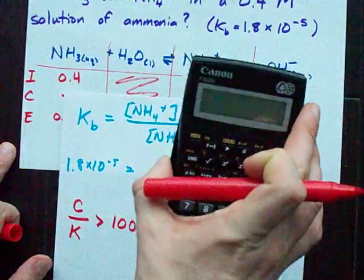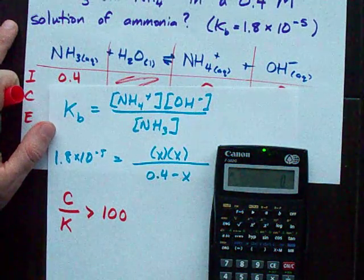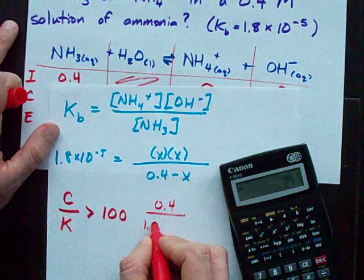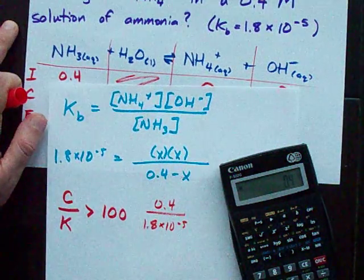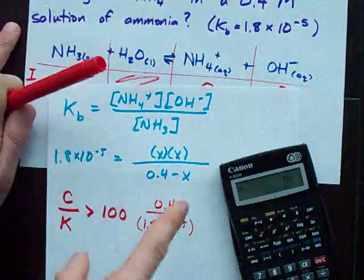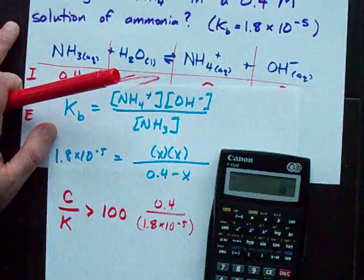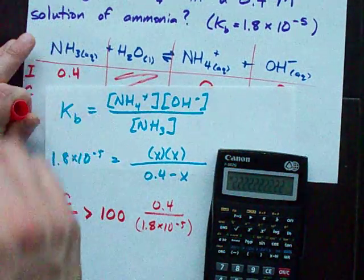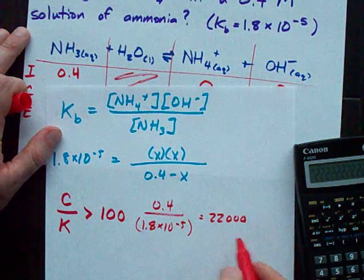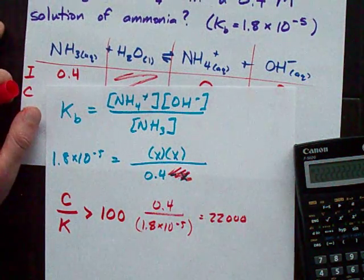This is me using the rule of 100. Something I personally never do, but you will have to. Concentration is 0.4 and we divide it by the K, which is 1.8 times 10 to the minus 5. Now, depending on how you type that into your calculator, you may want to put that in brackets just so your calculator doesn't get confused. 0.4 divided by 1.8 times 10 to the minus 5. I get 22,000. That's way bigger than 100, which means I could physically eliminate that minus x from my expression.